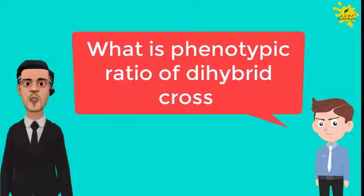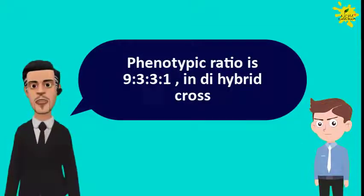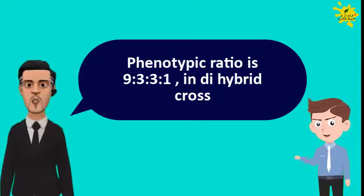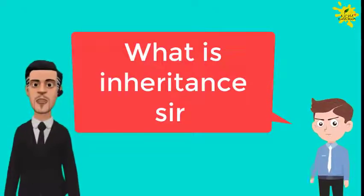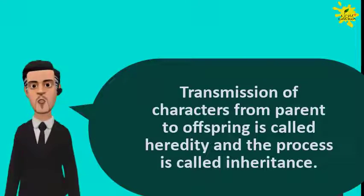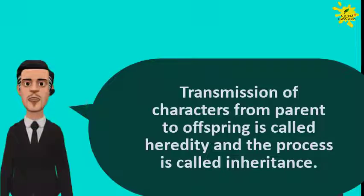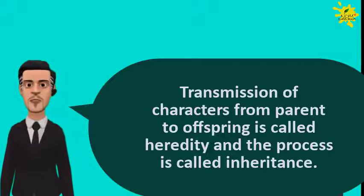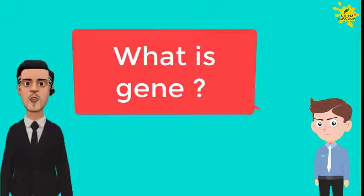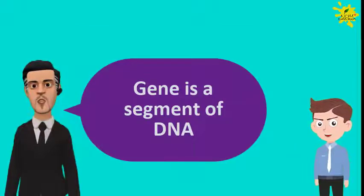What is the phenotypic ratio of dihybrid cross? Phenotypic ratio is 9:3:3:1. What is inheritance, sir? Transmission of characters from parent to offspring is called heredity and the process is called inheritance. What is a gene? Gene is a segment of DNA.